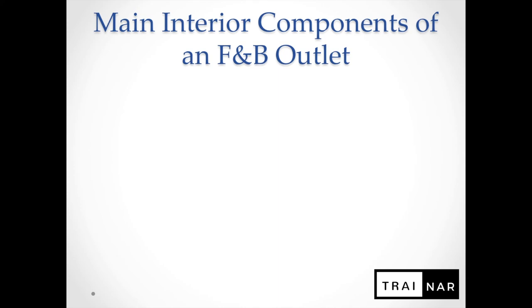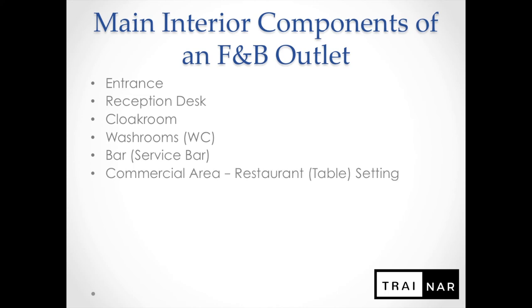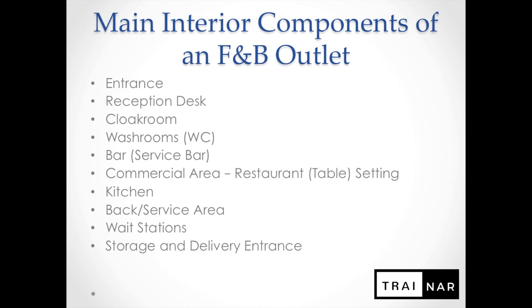Now, the main interior components of an F&B outlet — not all outlets will have every one of these, as it depends on the type of concept and establishment, but these are the main ones to consider in planning and design. They are: entrance, reception desk, cloakroom, washrooms, bar, service bar if applicable, commercial area or restaurant table setting, kitchen if you're serving food, back service area, wait stations, storage and delivery entrance, and service entrance and staff room.